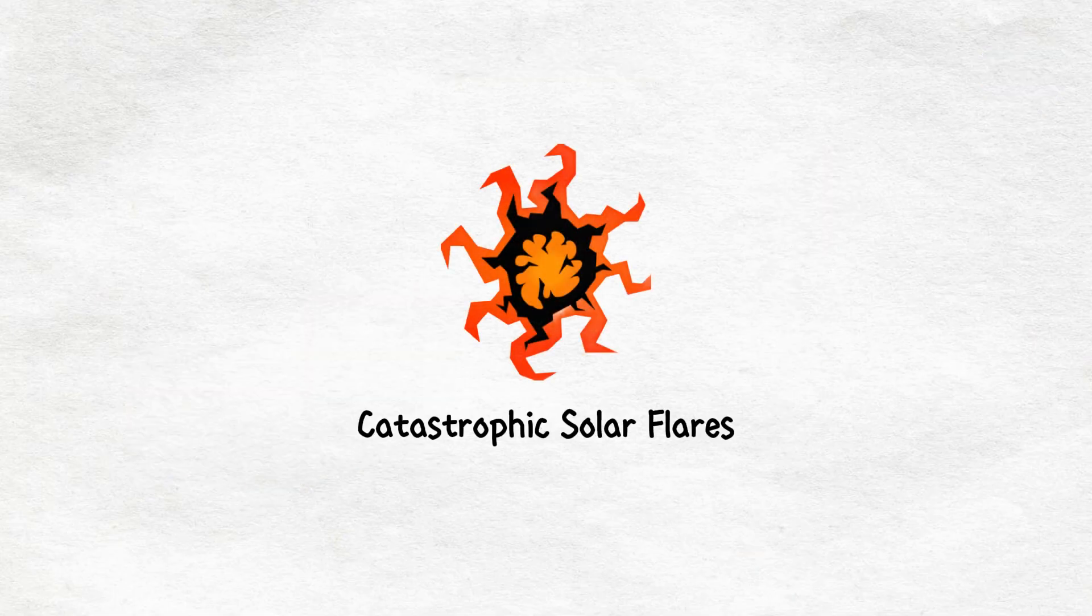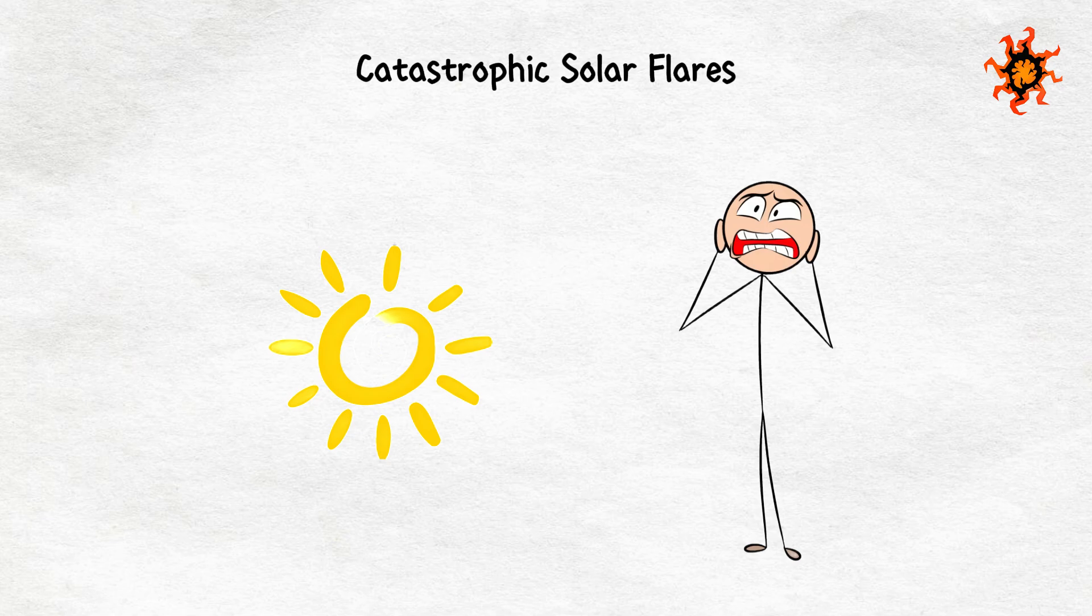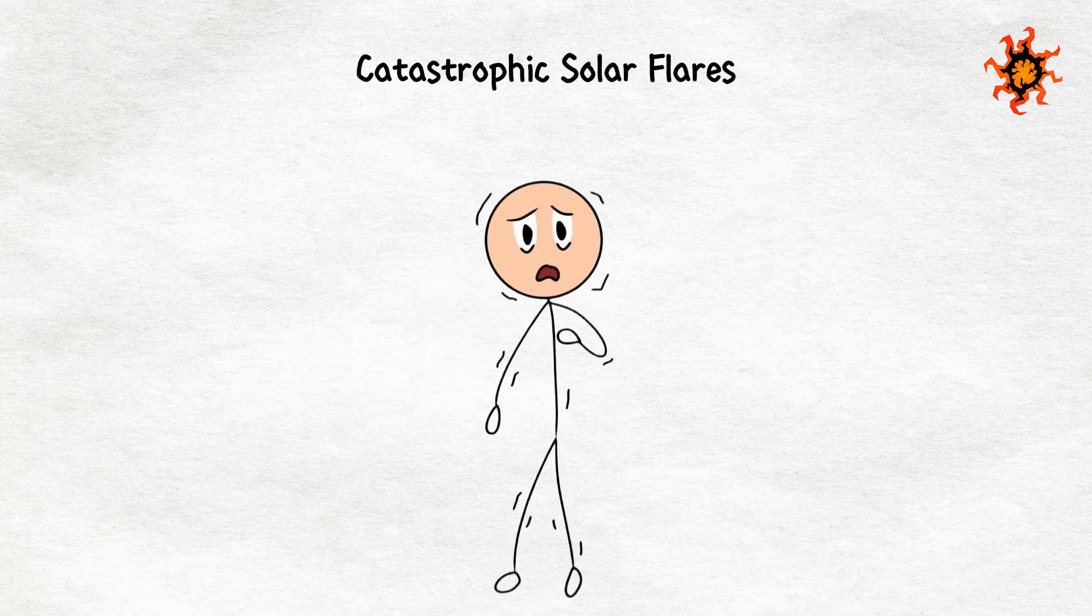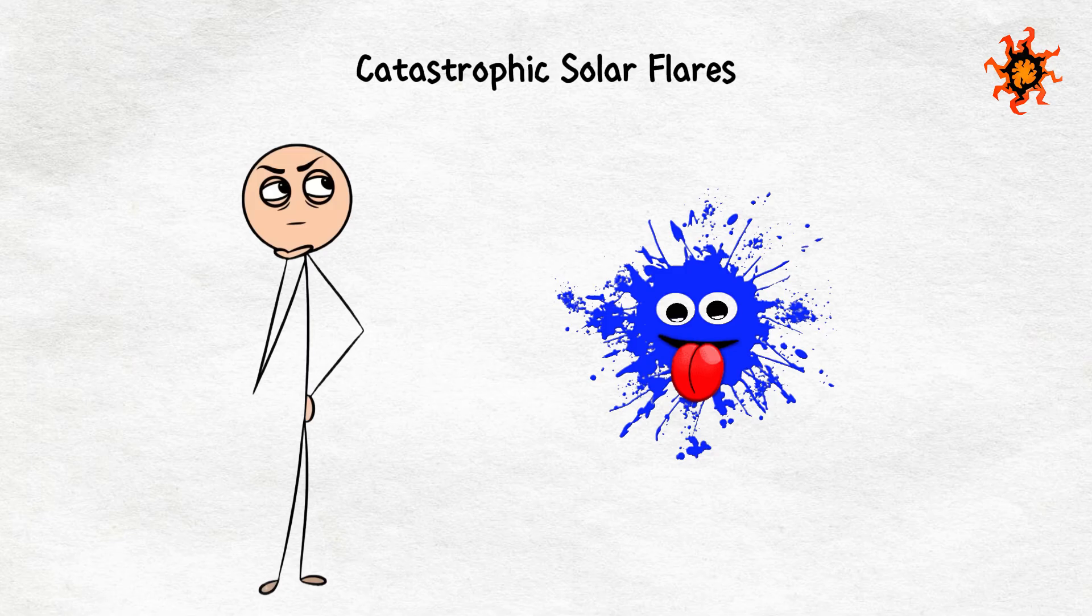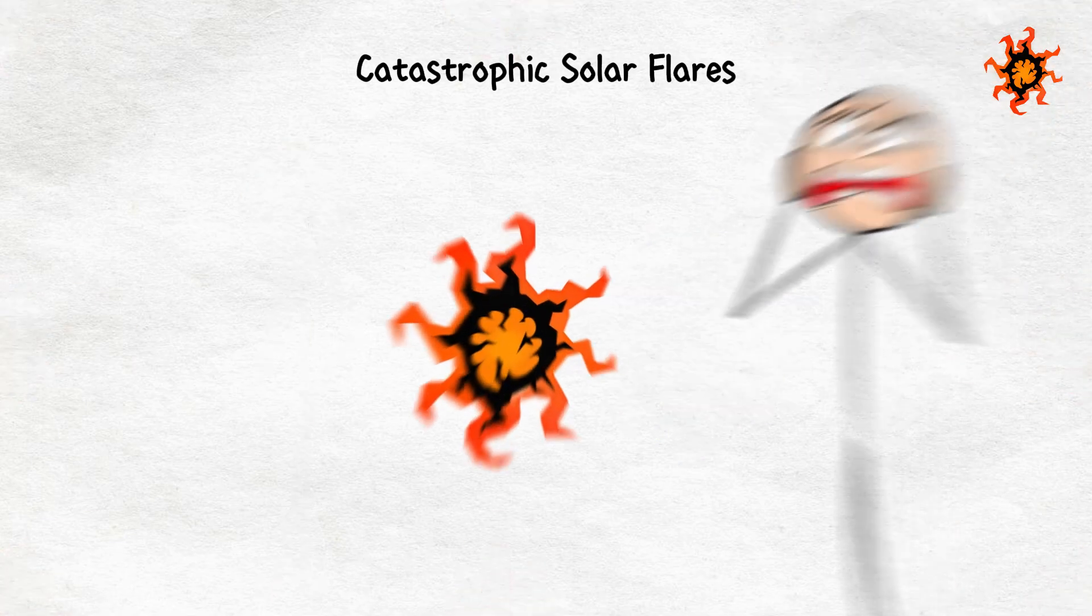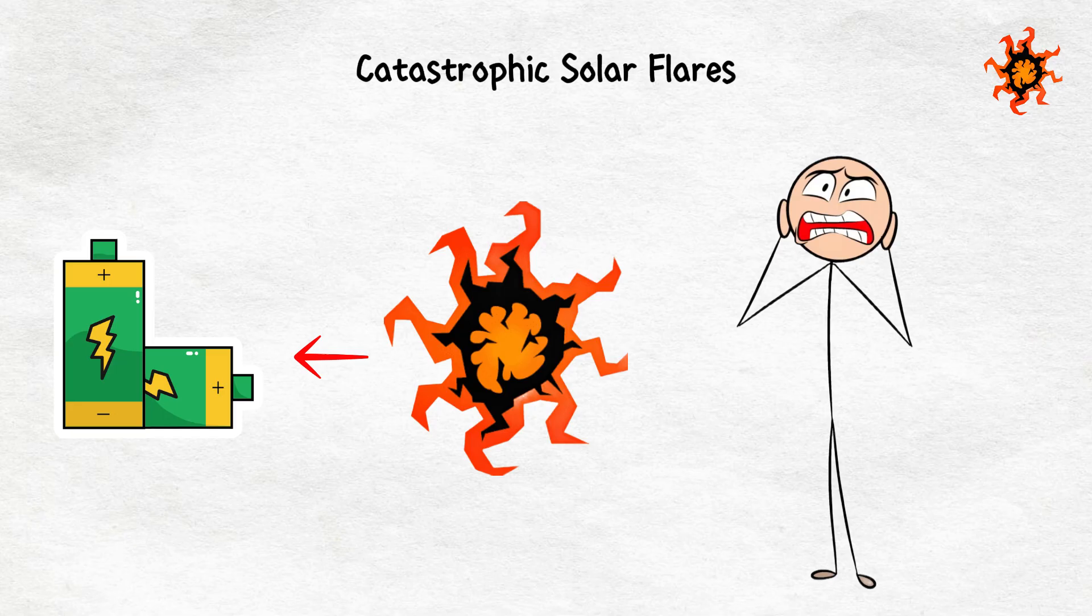Catastrophic solar flares. The sun, warm, bright, life-giving, is every now and then prone to the occasional fiery outburst. Solar flares are like the sun's version of a temper tantrum. And when they happen, things can get real chaotic. These solar flares are basically massive bursts of energy that the sun throws out into space.